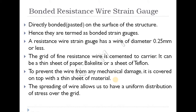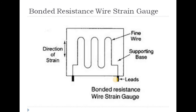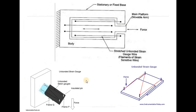The second type is bonded resistant wire strain gauge. 'Bonded' means directly bonded or directly pasted on the surface of the structure. If it is directly bonded, it is directly attached; if it is indirectly attached, it is unbonded. The wire is connected to the surface of the structure — it is embedded in the material.